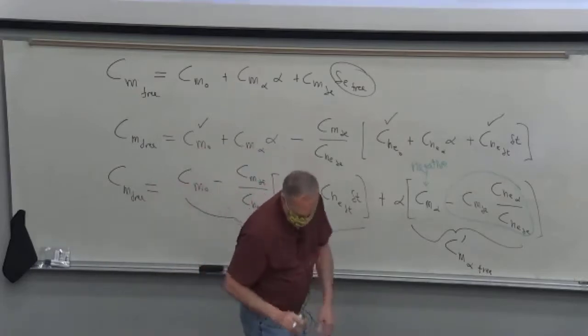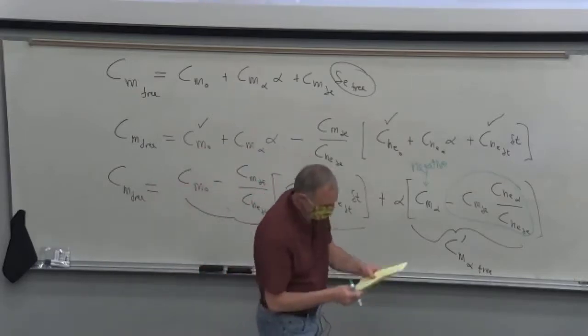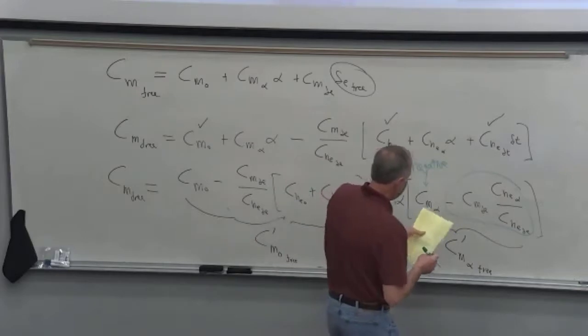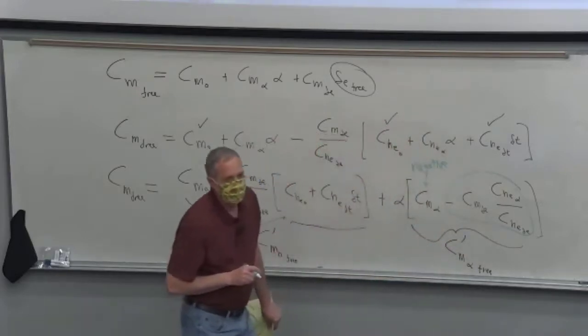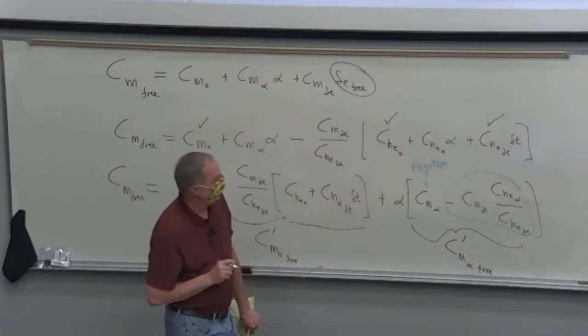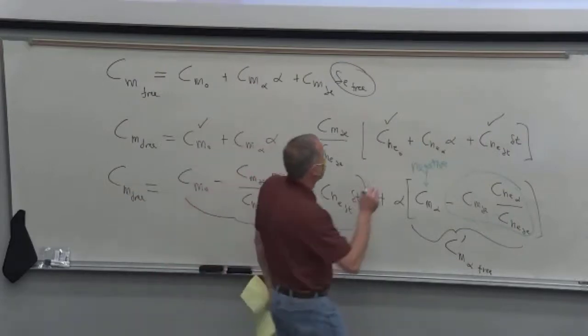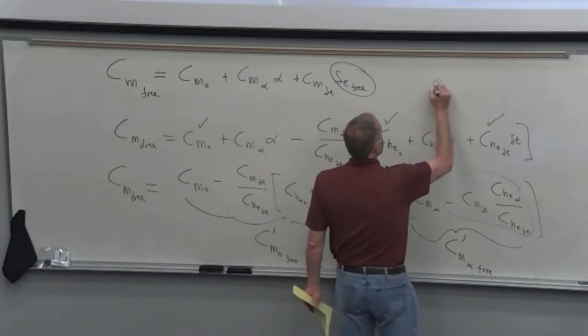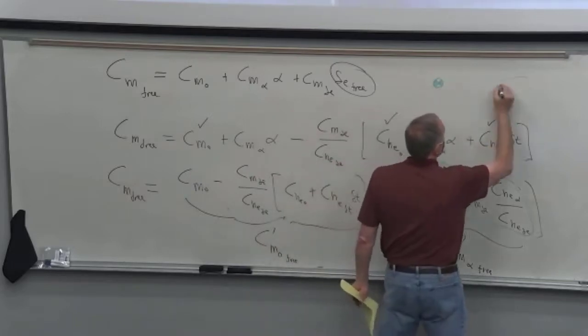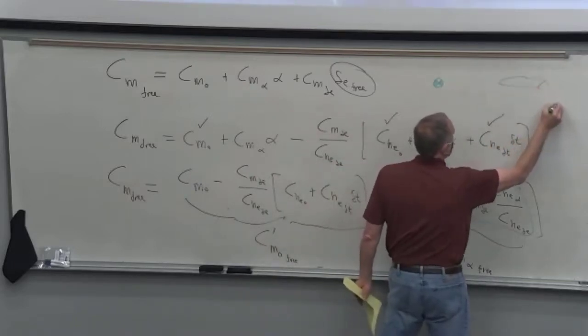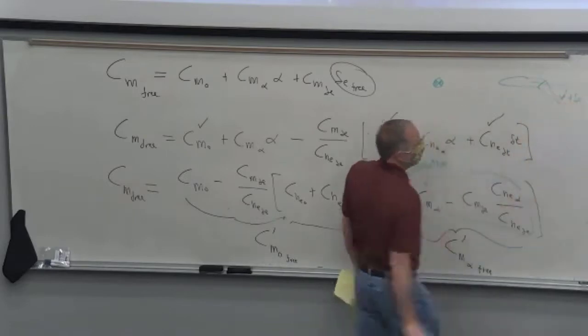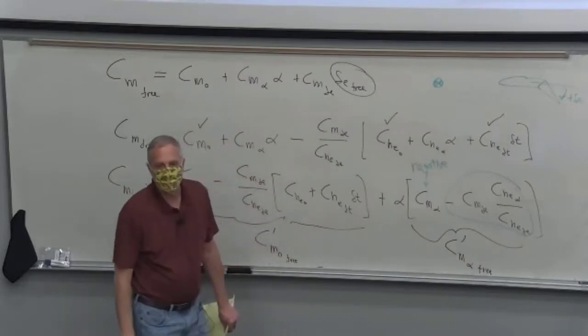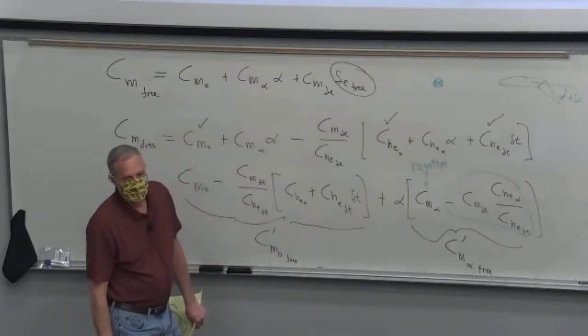So let's look at the typical signs for these things. So CM delta E is the pitching moment due to a positive elevator deflection. So what's that? In our conventional airplane, here's the tail. There's a positive elevator. Does that create a positive or a negative pitching moment? It's nose down, right? So it's negative. I'm talking about the change in pitching moment of the airplane due to delta E. Straight back, no pitching moment. Pitch down. It's going to cause nose down, which is negative. So this is a negative number here.